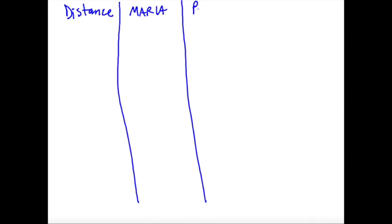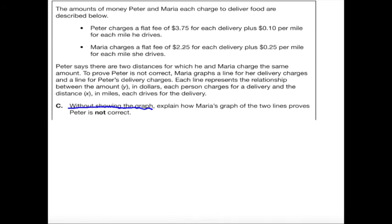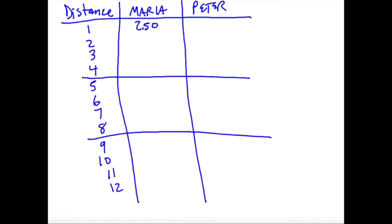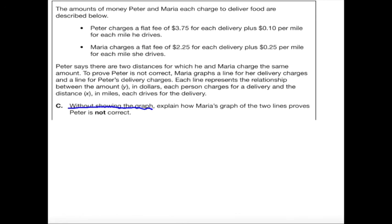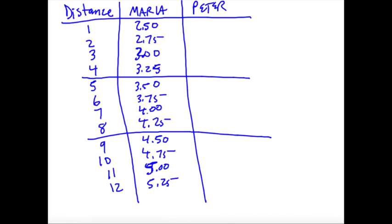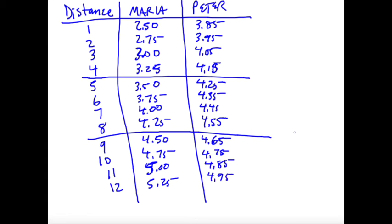So we have distance. How much does Maria charge? How much does Peter charge? Maria charges $0.25 per mile. At the first mile, she'll be at $2.50. So we got $2.50 for one mile, $2.75 for two miles, $3.00 for three miles, $3.25 for four miles. All right, those are the prices for Maria. And now let's do the same thing with Peter.